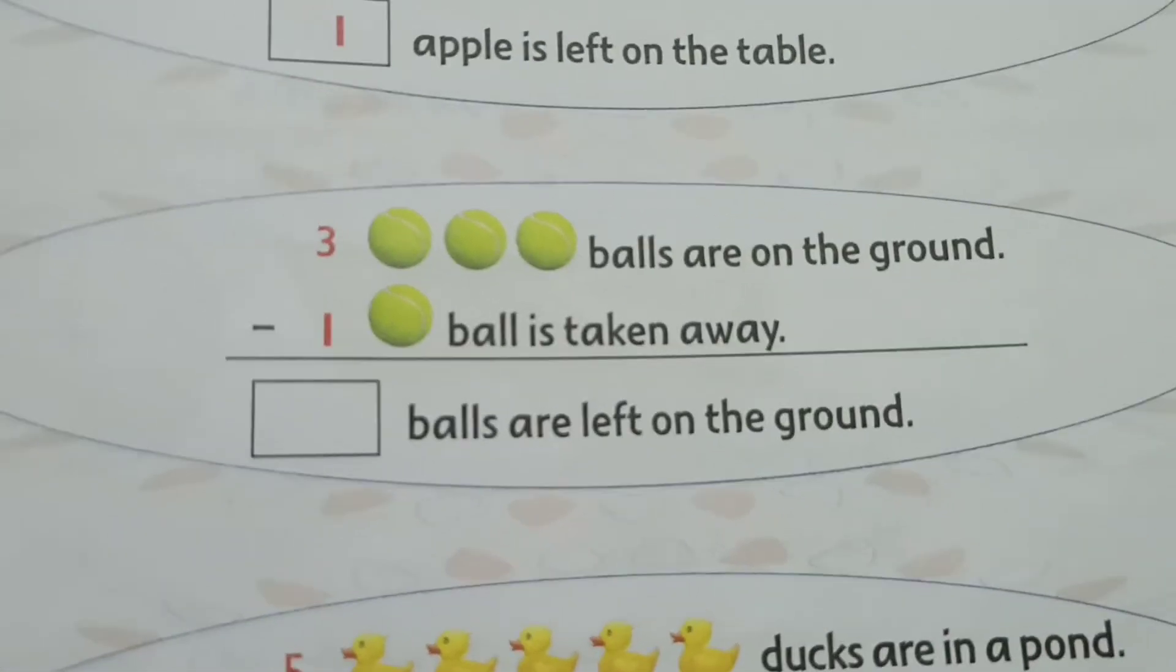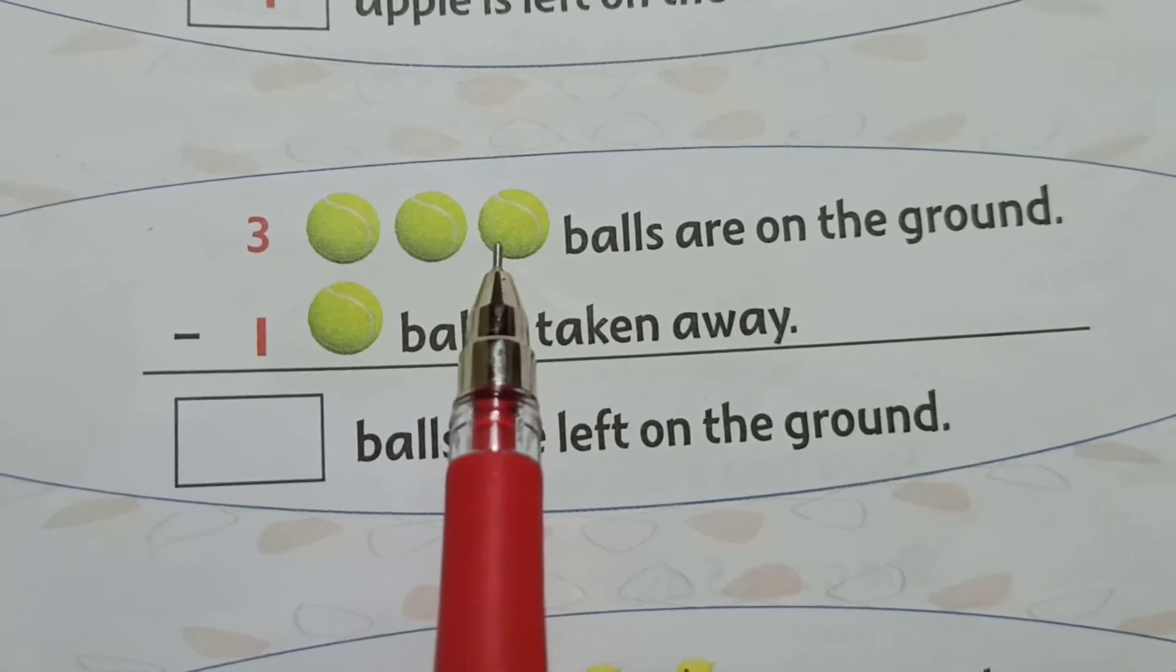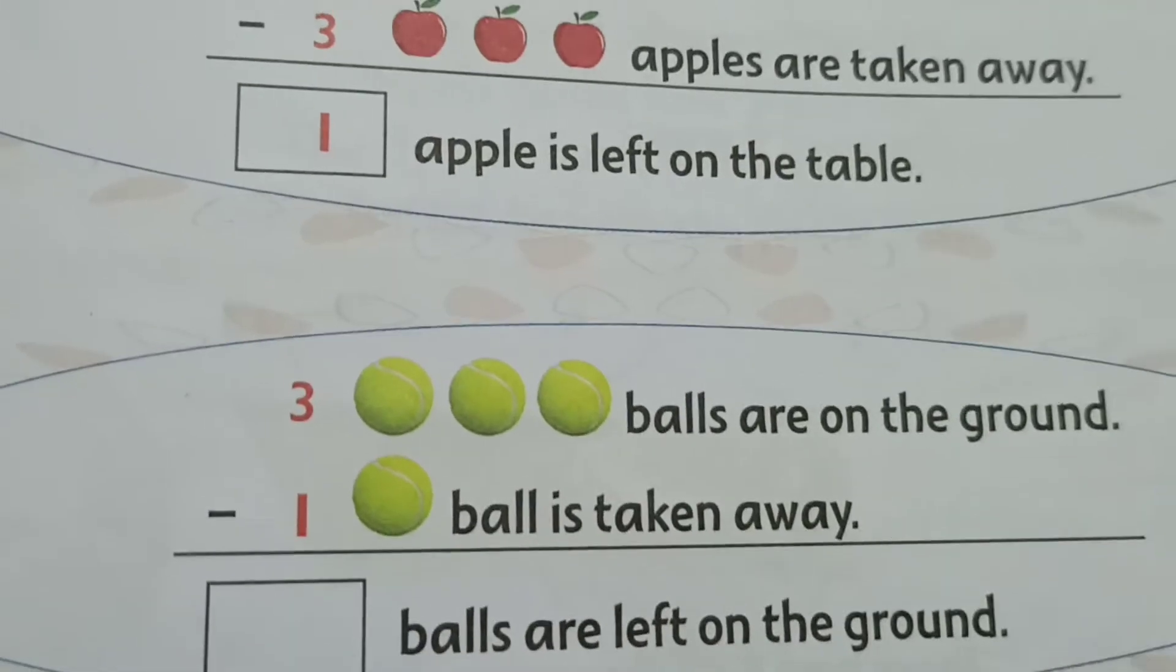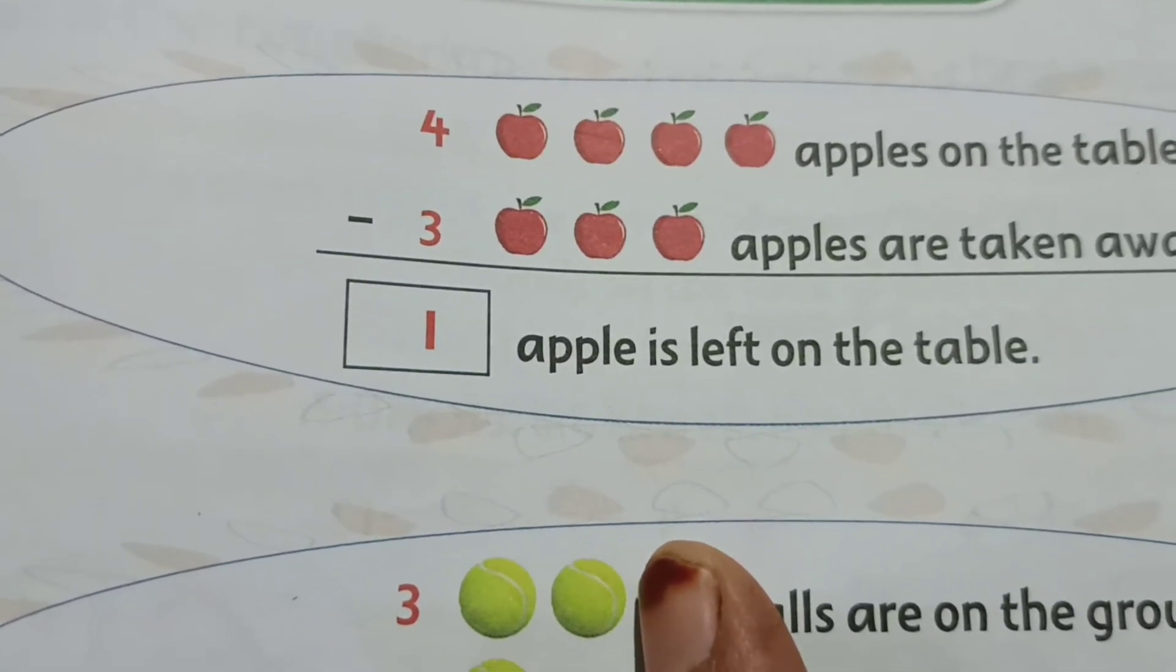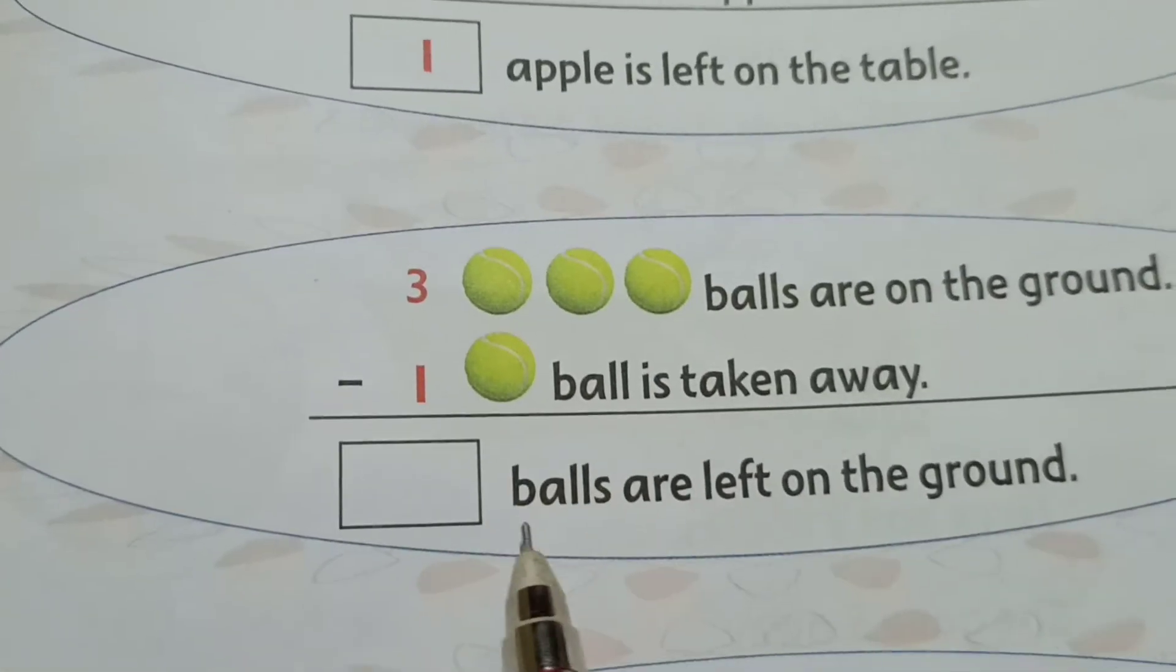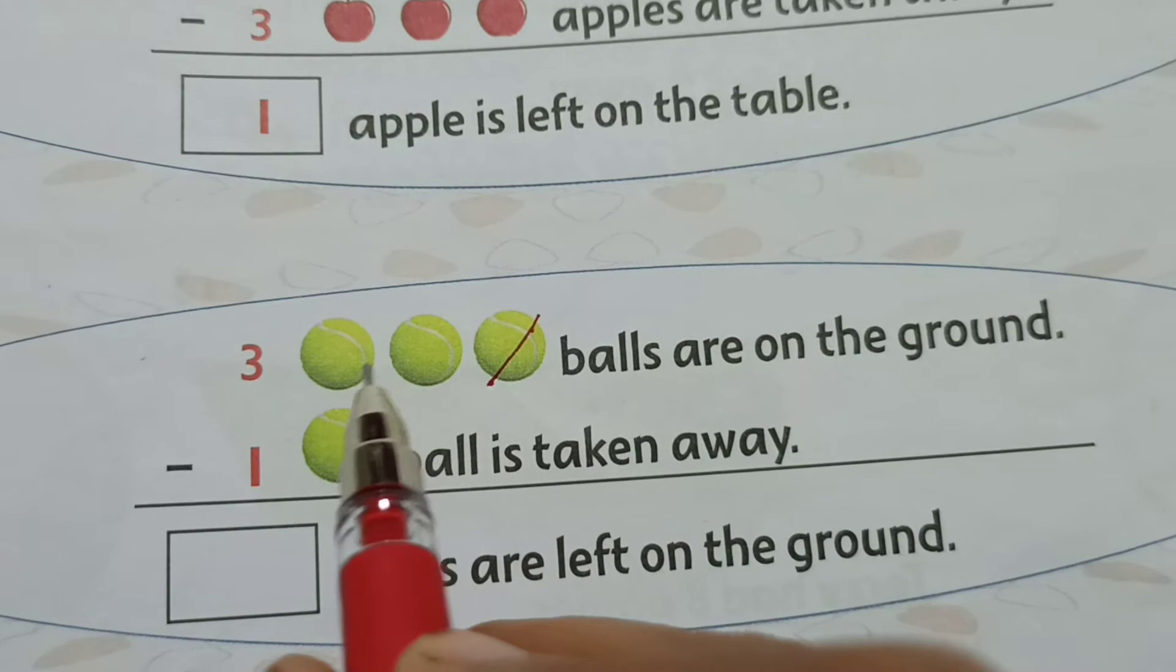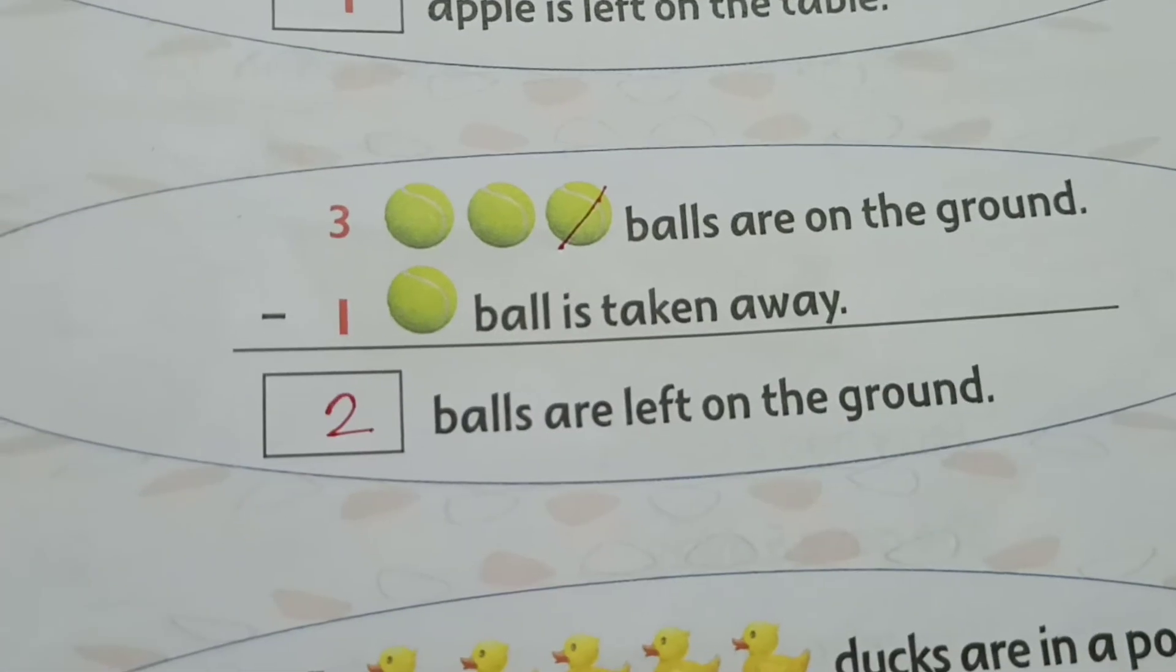You can see a ball. How many balls are there? 1, 2, and 3 balls are on the ground. From that, minus 1 ball is taken away. So 1 ball will be taken away. So here you can see how many balls remain? From 3, minus 1 remains. We will cut here. We will cut this. We will not see this. 1, we will cut out. So how many remains here? 1, 2. 2 balls are left on the ground.